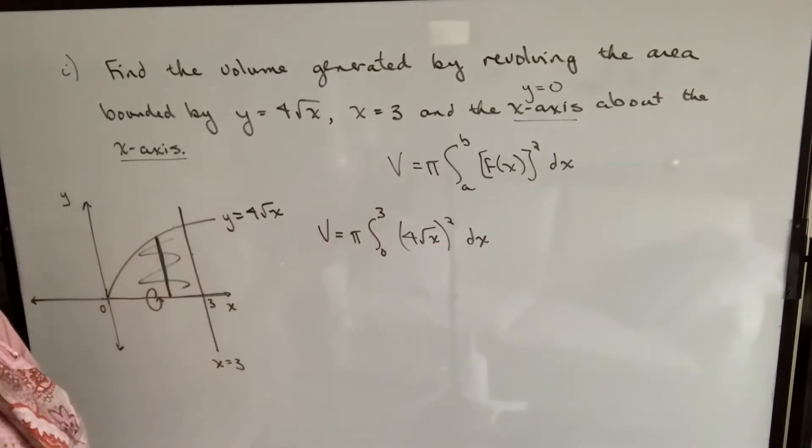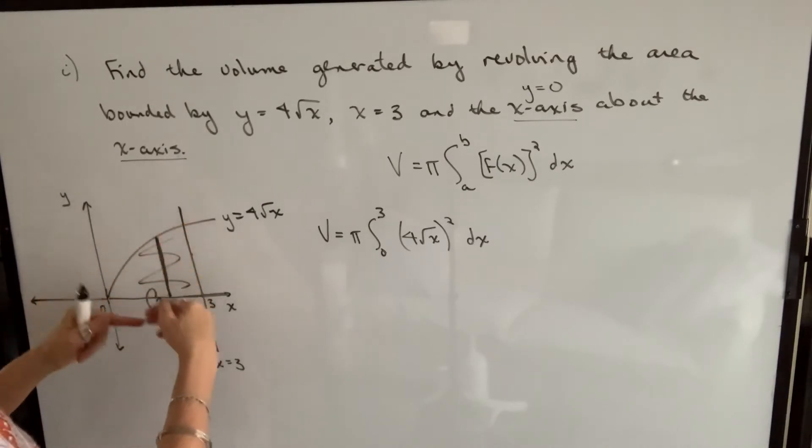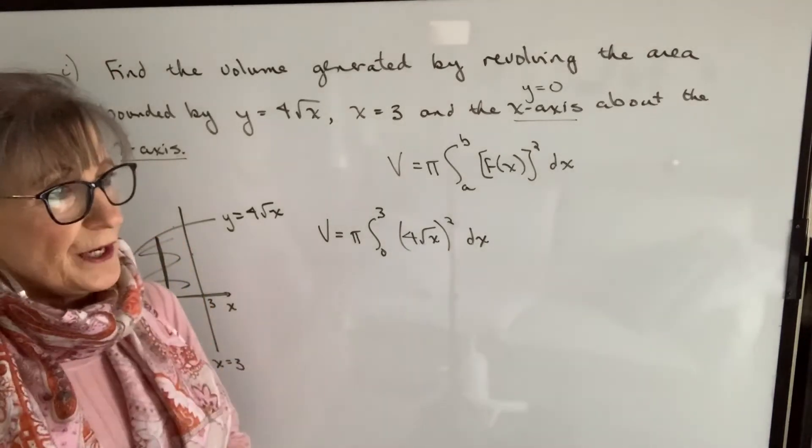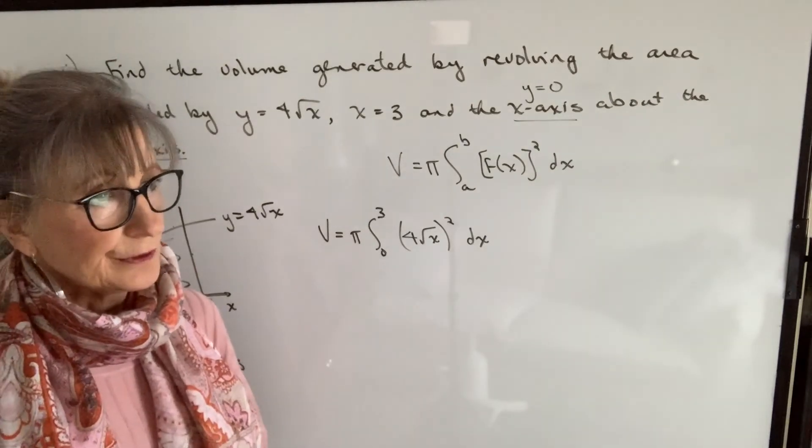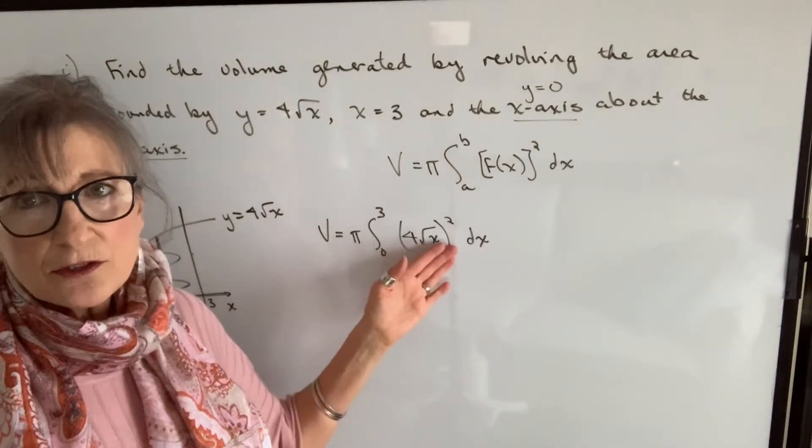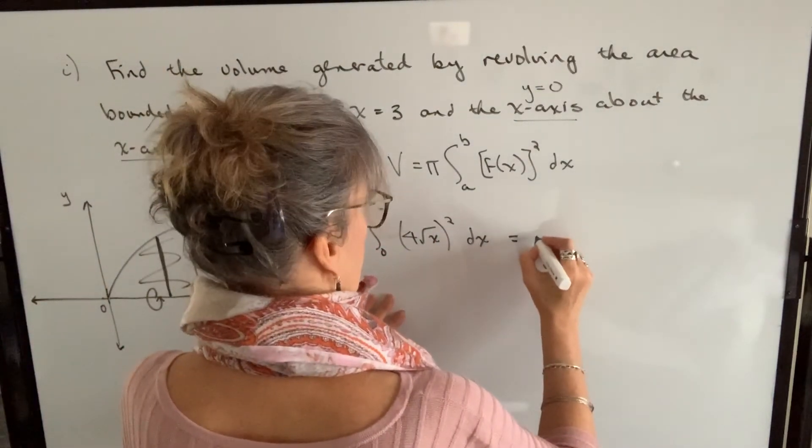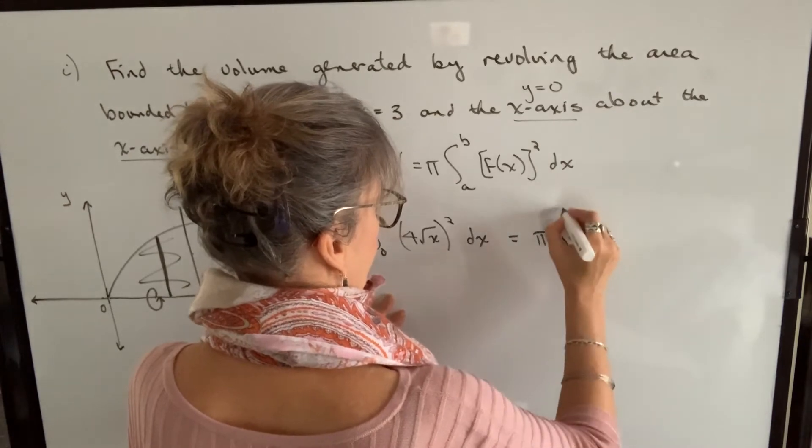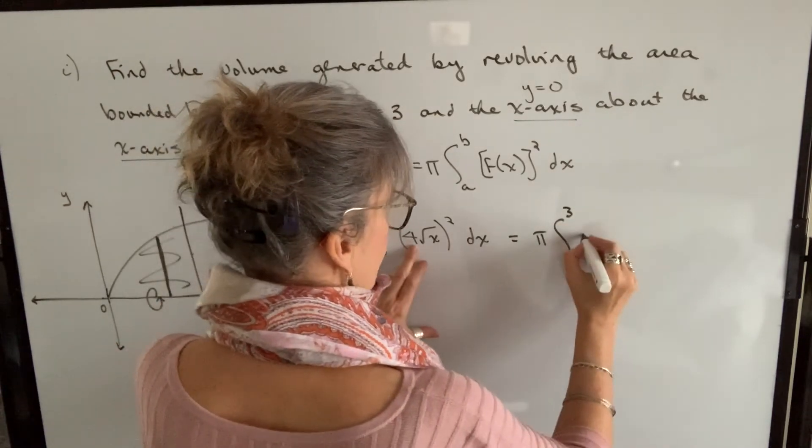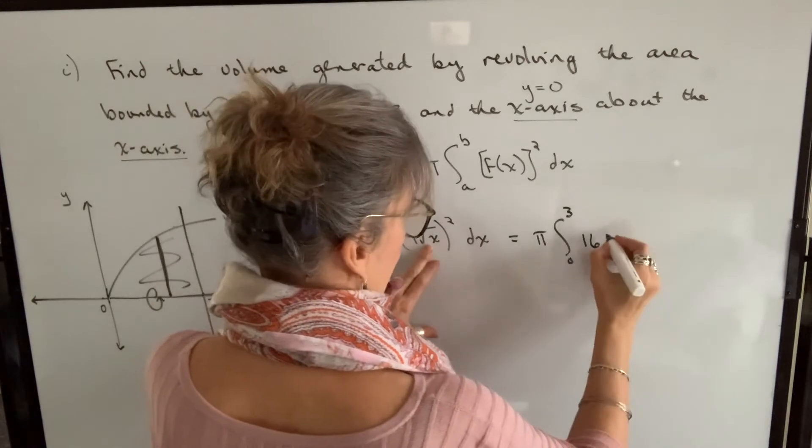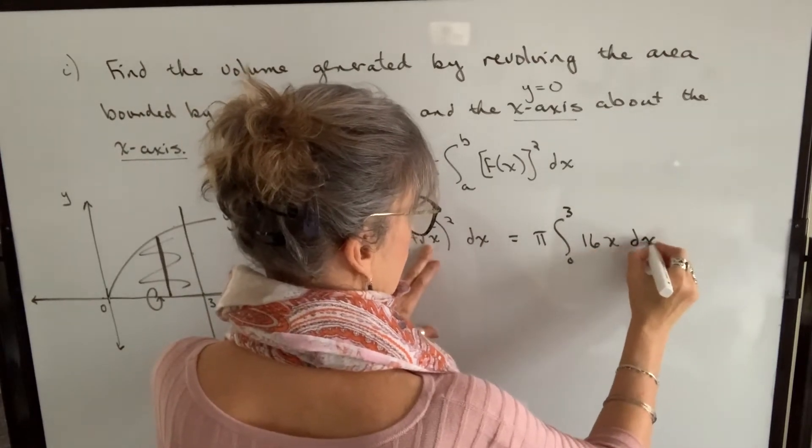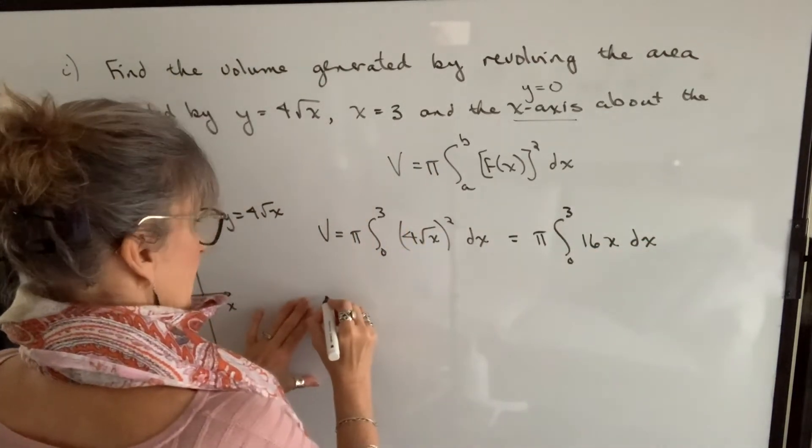This integral will therefore give us the volume of the solid formed by taking this area and rotating it around the x-axis. And hopefully you can envision what this looks like. It's going to be like the cone head of a missile or something like that. Before we integrate this, we need to simplify it. Because we can square this, so it will be pi times the integral of 16x, and square root of x squared will be x. So now we can integrate that.